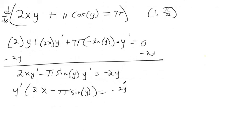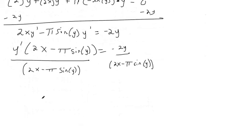And then the goal is to get y prime by itself. So I can divide 2x minus pi sine y from both sides. And now we've got y prime by itself.